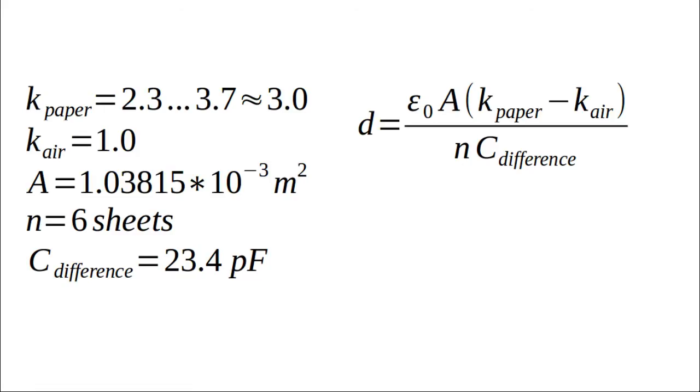Here you have all of the values recorded during this test. You can see that the relative permeability of paper does vary a bit depending on which source you use online, so I'll just be using an average of three. Using this calculation method, we got a thickness of a sheet of paper of 0.13 millimeters, which compares fairly well to the caliper measurement of 0.11 millimeters.